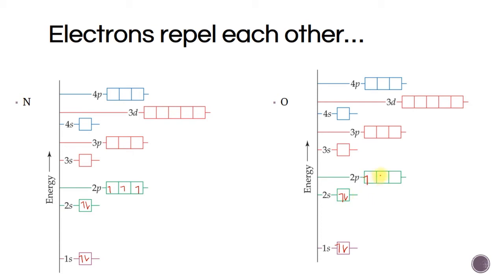Oxygen is the same as nitrogen except it has one more electron. That extra electron has to go opposite to the one already in a box — you can place it in the first, second, or third box. Those two rules — Pauli exclusion and Hund's rule — govern how we fill orbital diagrams and how electrons are organized.